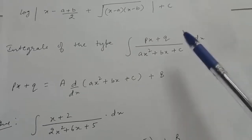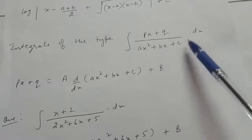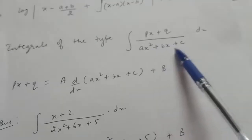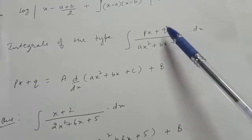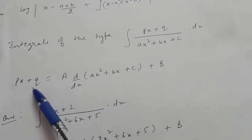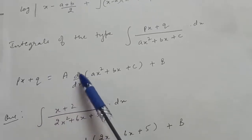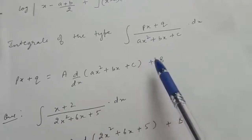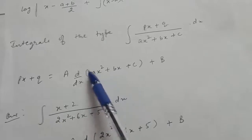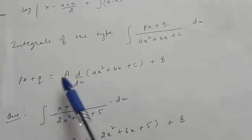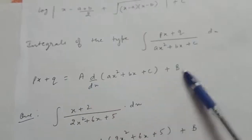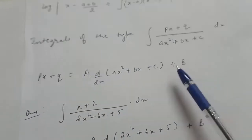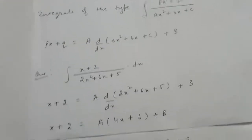Now there are integrals of the type (px + q) upon (ax² + bx + c) dx, where the denominator is a quadratic and the numerator is linear in x. Write px + q as A times the derivative of the denominator plus B. Solve the derivative and compare coefficients to find A and B, then substitute and integrate.